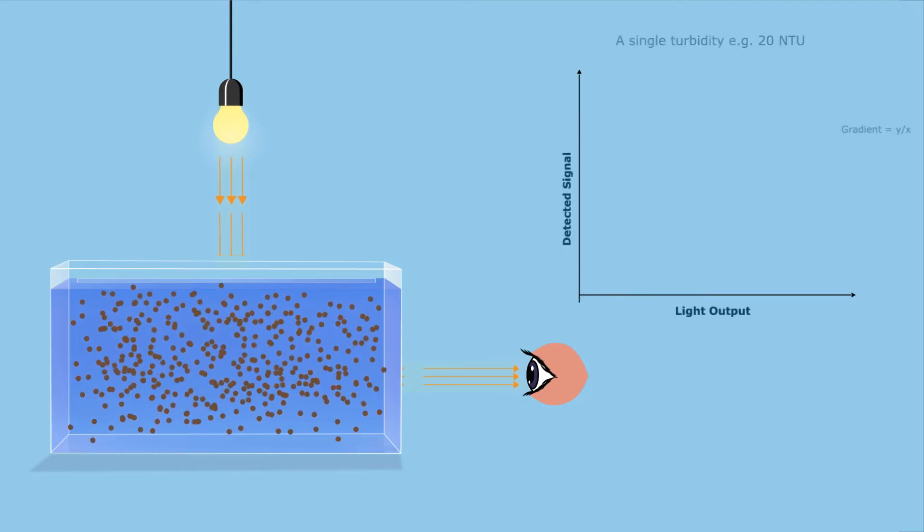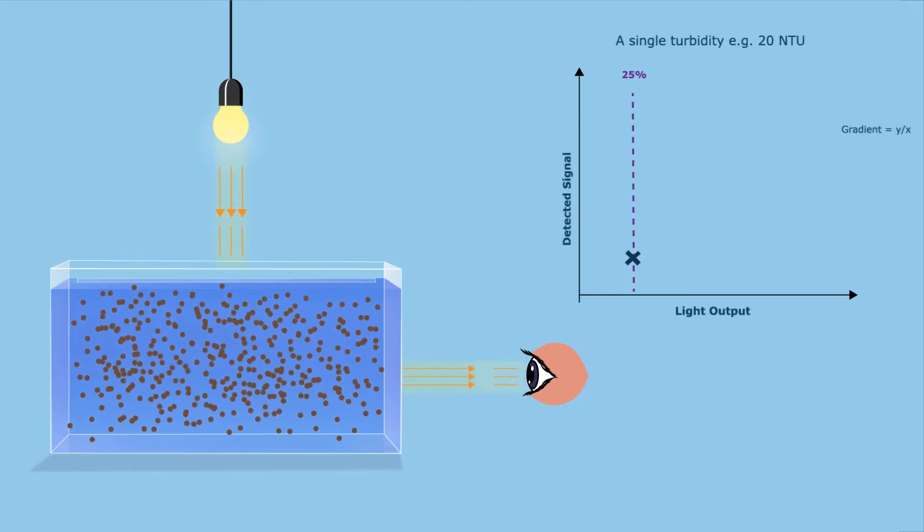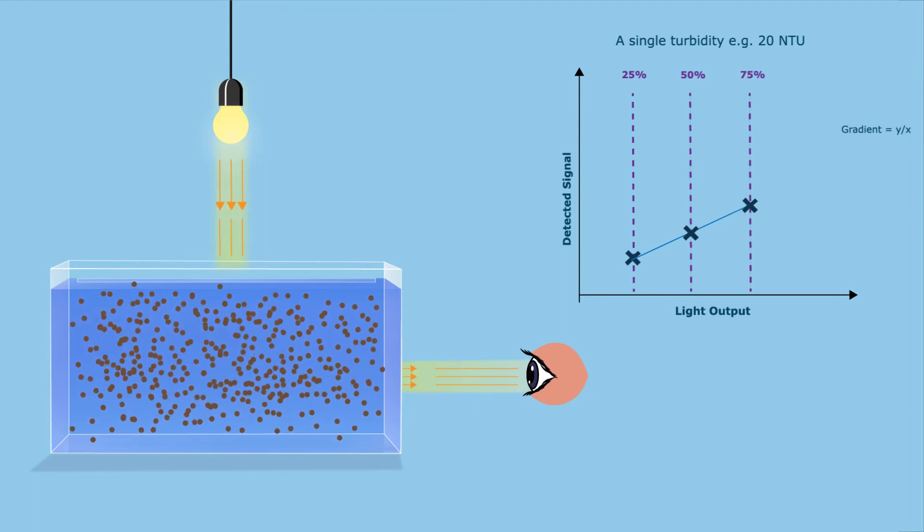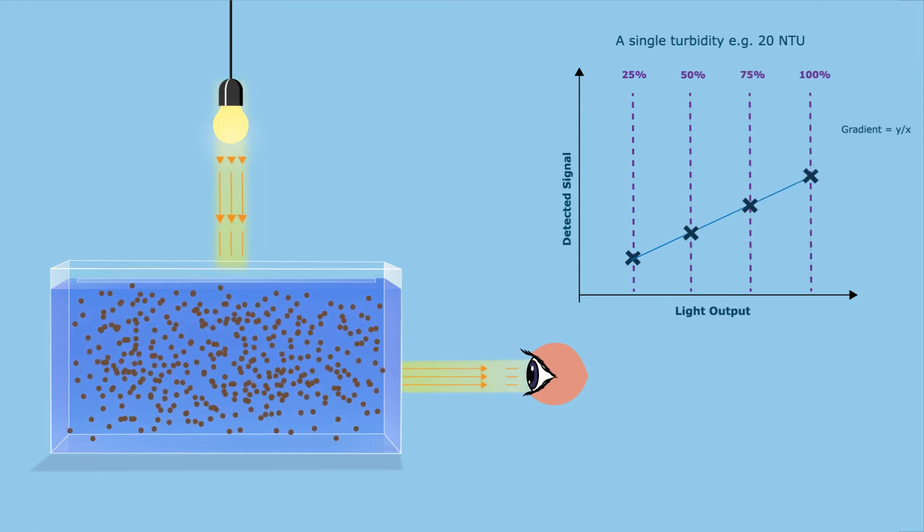This is possible by using the patented MutoLux method of rapidly changing the intensity of the light source for each measurement and then calculating the gradient the signals produce.